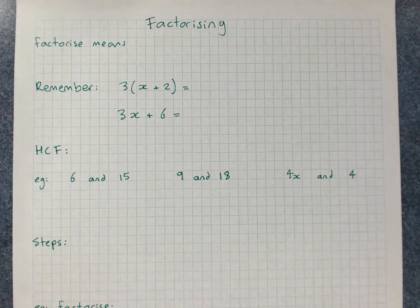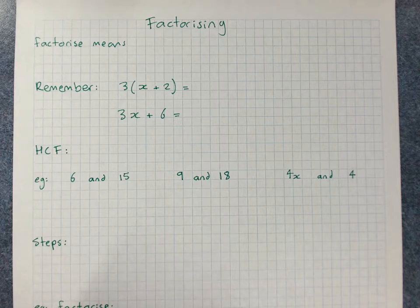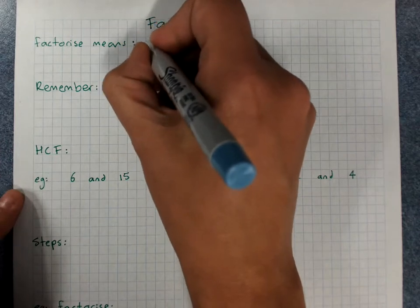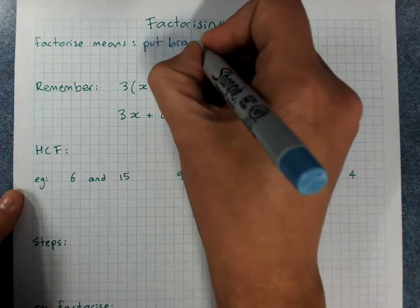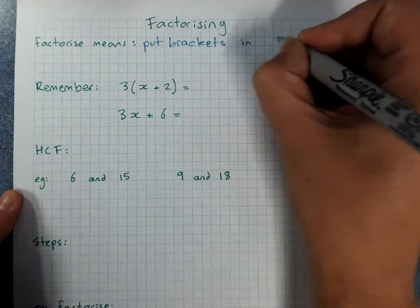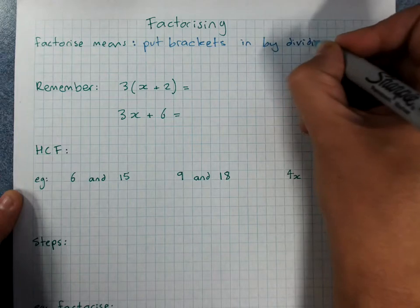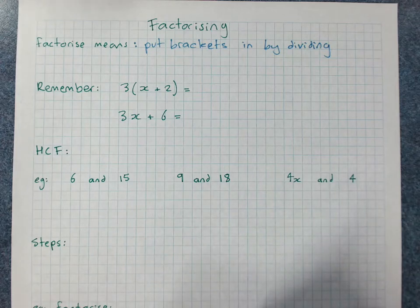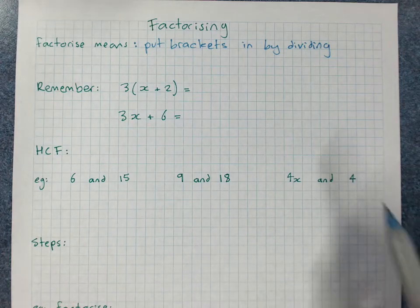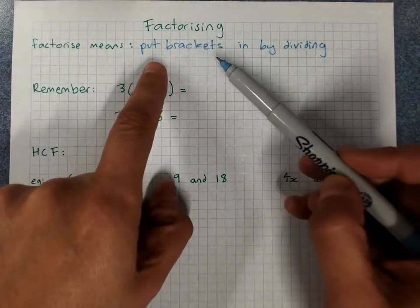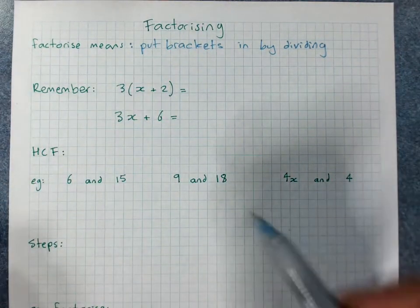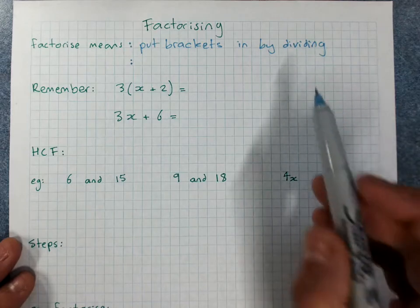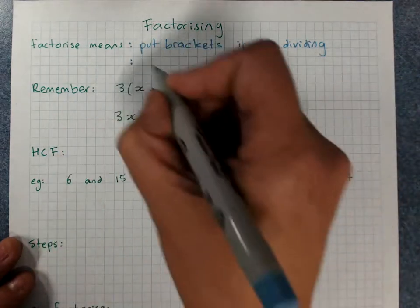Factorizing. Now we remember, factorize means to put the brackets in by dividing. Because factorizing is the opposite of expanding. Expanding means to take the brackets out by multiplying. So factorizing, we put the brackets in by dividing. And we do this by finding the highest common factor of two terms and dividing. And we'll work out what that means and how to do it.